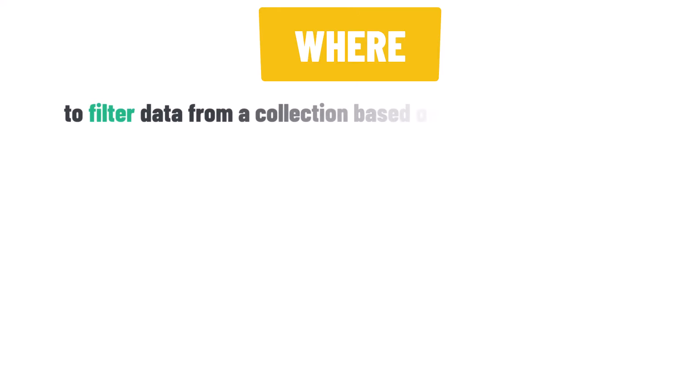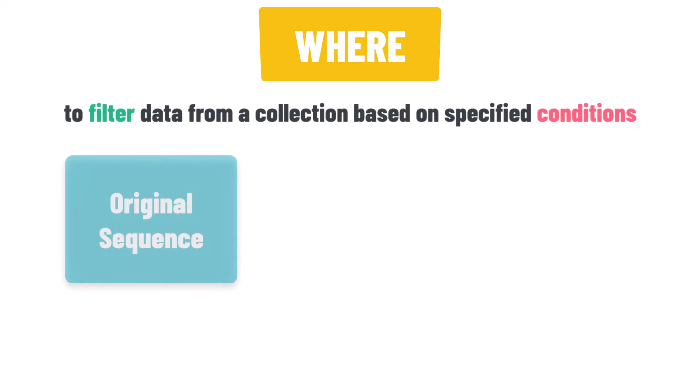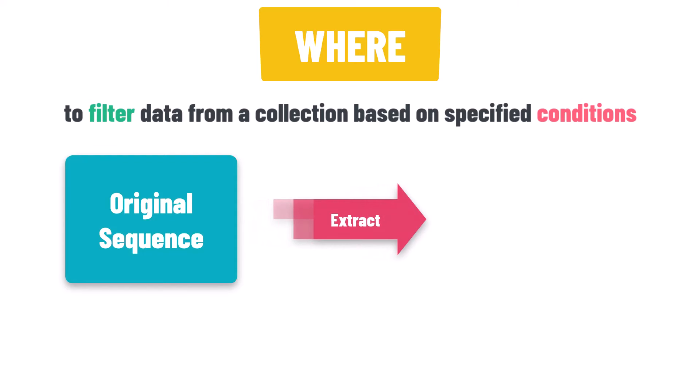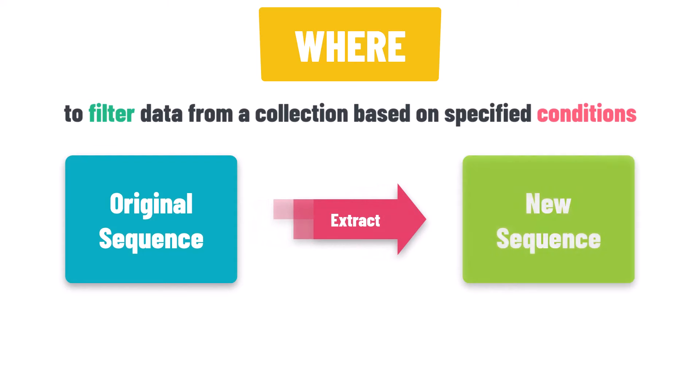In this video, we will dive into the powerful WHERE method, which allows us to filter data based on specific criteria. The WHERE method is used to filter data from a collection based on specified conditions. It enables us to extract elements that satisfy a given predicate and create a new sequence containing only those elements.